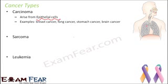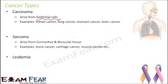Sarcoma arises from the connective and muscular tissue. Uncontrolled growth of cells is seen in the connective or muscular tissue — maybe in the cartilage, muscles, bones, tendons, or ligaments — and they all fall under the category of sarcoma. All these muscle and connective tissues are derived from the mesoderm, that is the middle layer. Sarcomas are quite rare in human beings; in fact, only 1% of tumors are sarcomas.